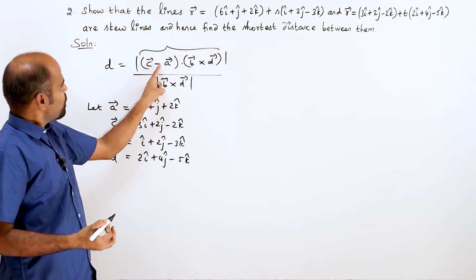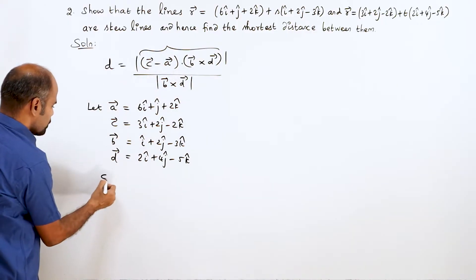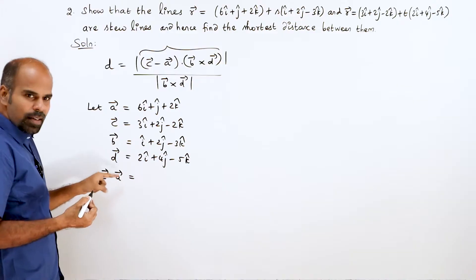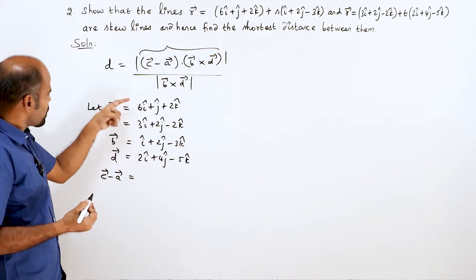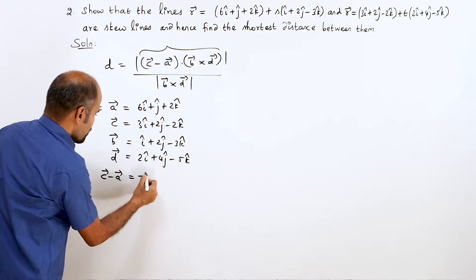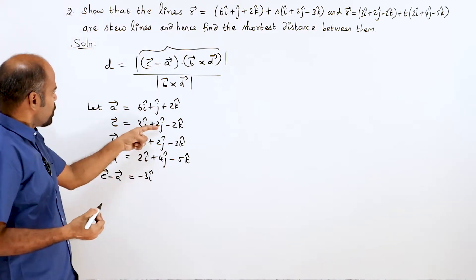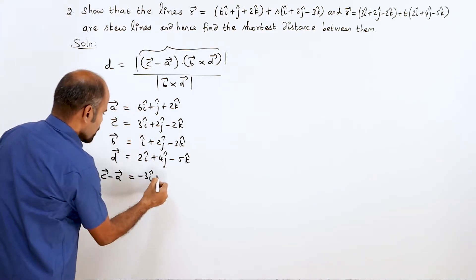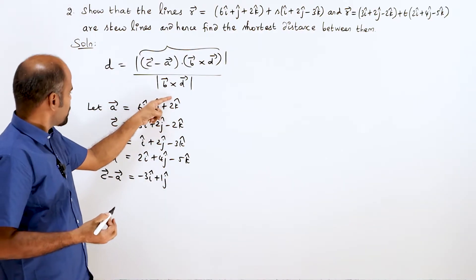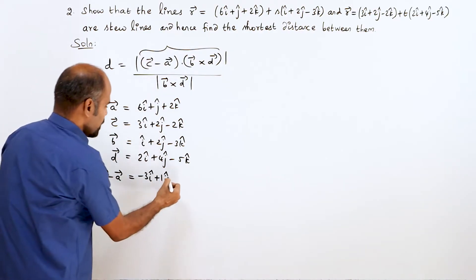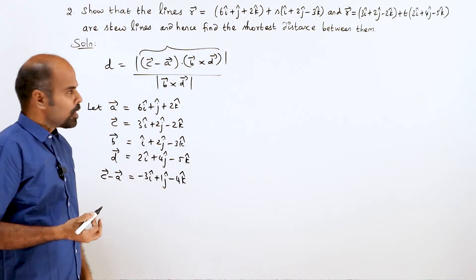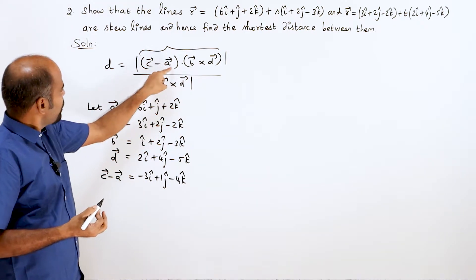Now let's find c vector minus a vector. c vector: no change of sign — 3i, 2j, minus 2k. a vector: opposite sign — minus 6i, minus j, minus 2k. So: 3 minus 6 = minus 3i cap; 2 minus 1 = plus 1j cap; minus 2 minus 2 = minus 4k cap. Therefore c vector minus a vector = minus 3i cap plus j cap minus 4k cap.